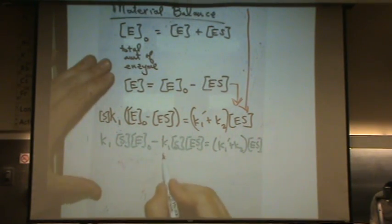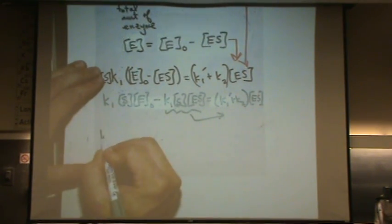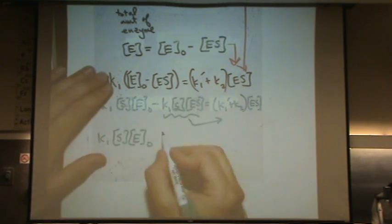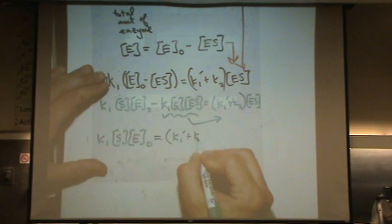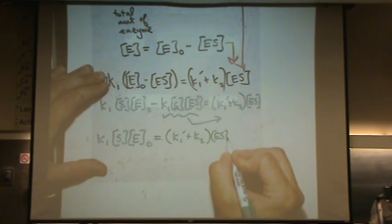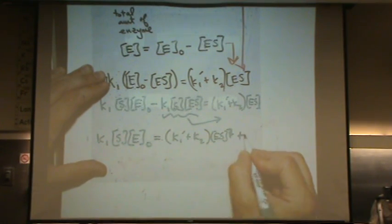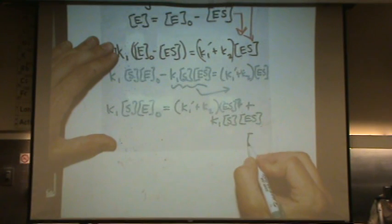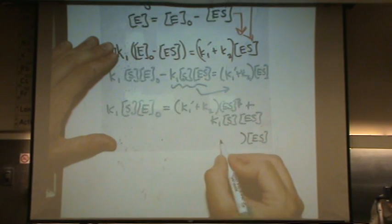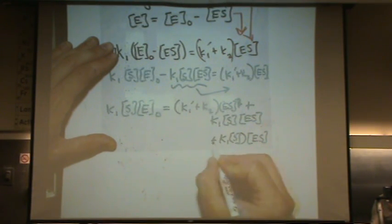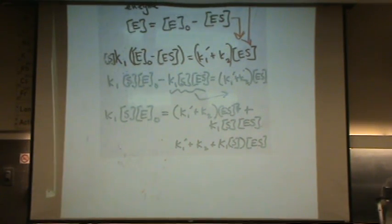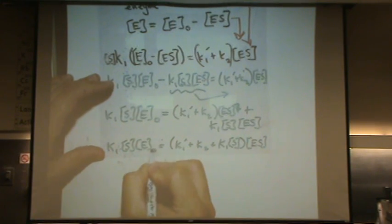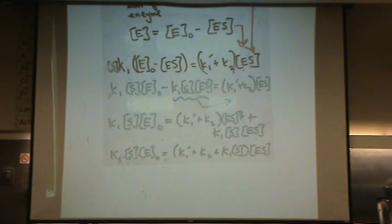Okay, so I'm going to move this ES term over here to the right hand side. Let's do that. K1, S, E naught, still on the left hand side, equals K1 prime plus K2, ES. So I'm going to factor out the ES, plus K1, S, ES. I'm going to factor out the ES on the right hand side. So that will leave me with K1, S, K2 plus K1 prime. So I just factored out the ES. Left other side still the same. So this is just algebra. We're trying to get an expression for an intermediate. It's kind of a mess, but we'll eventually get there.